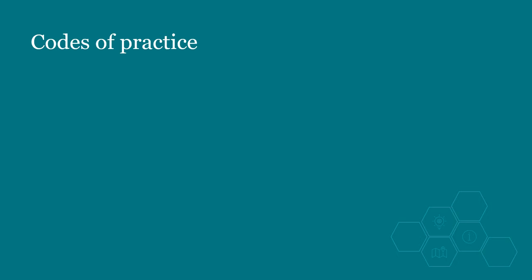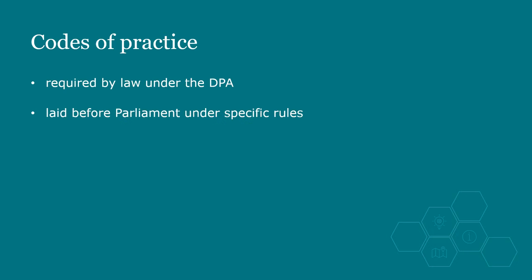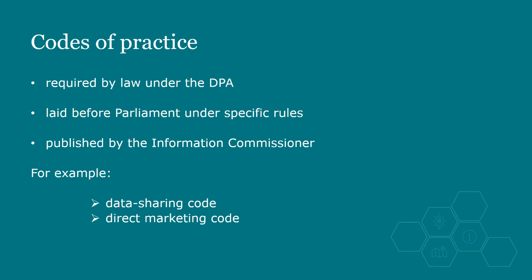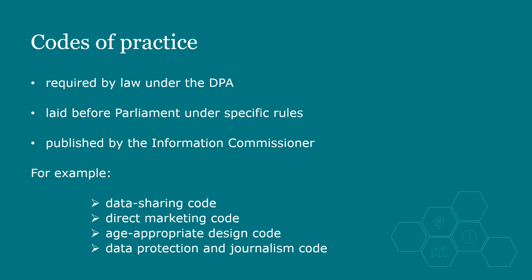A key task of the Commissioner is to produce codes of practice to promote the awareness of controllers and processors of their data protection obligations. Sections 121 to 128 in Part 5 of the DPA give details of which codes must be produced. The codes are required by law, laid before Parliament, and published by the Commissioner. They include the Data Sharing Code, Direct Marketing Code, Age Appropriate Design Code and the Data Protection and Journalism Code. The Secretary of State may require further statutory codes of practice by regulation. The Commissioner can also decide to produce codes of practice for guidance — for example, the Code of Practice for the use of personal information in political campaigns falls into this category.